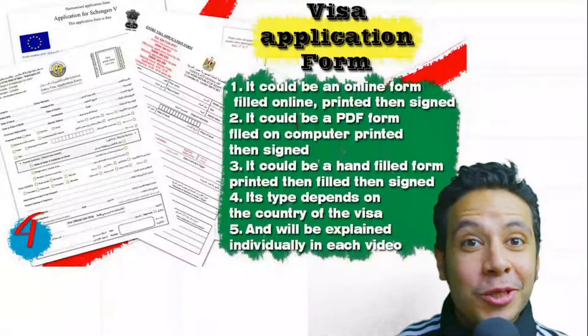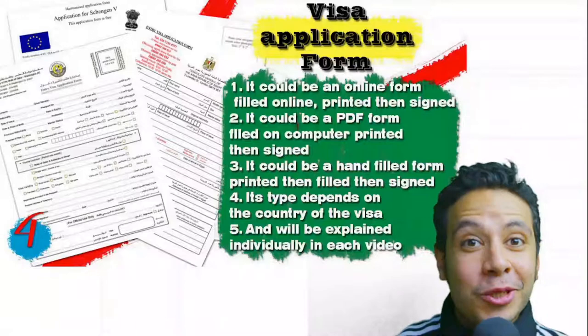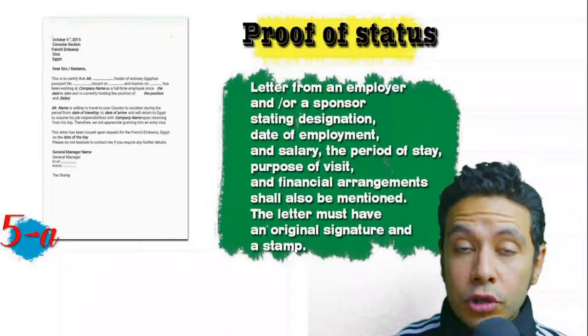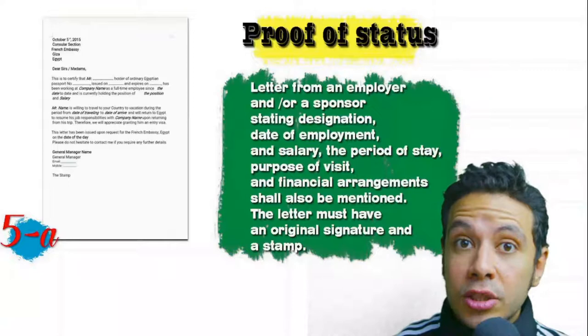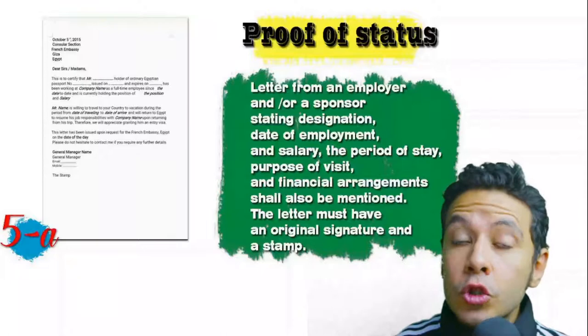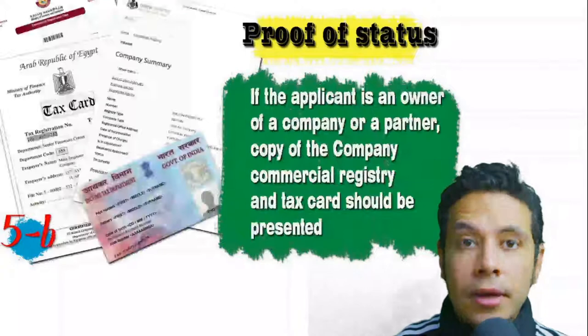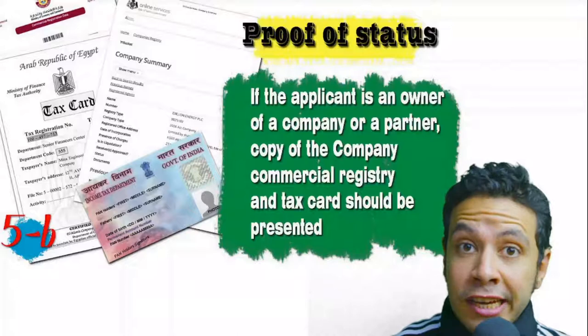In most visa application processes you will need to provide a proof of status. If you are an employee, provide a letter from your employer or HR department mentioning your name, work details, salary, address, and contact number, with an original signature and stamp. If you own a business, present your commercial registry and tax card. If you are a student, provide an enrollment letter from your university or school.